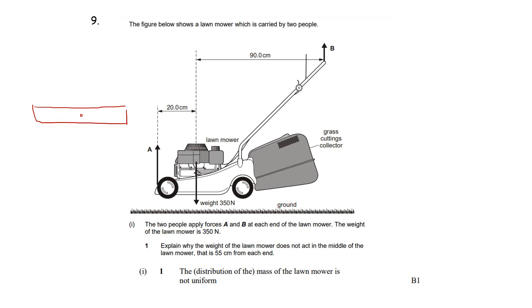We could say the weight, which is the force that can be considered to act from the center of gravity, would be right in the center. But of course with the lawnmower we've got the motor at the front which is going to be heavier than the rest of it, and so that's going to mean that the center of gravity is off centered. But just to get the mark here we just need to say the mass of the lawnmower is not uniform.